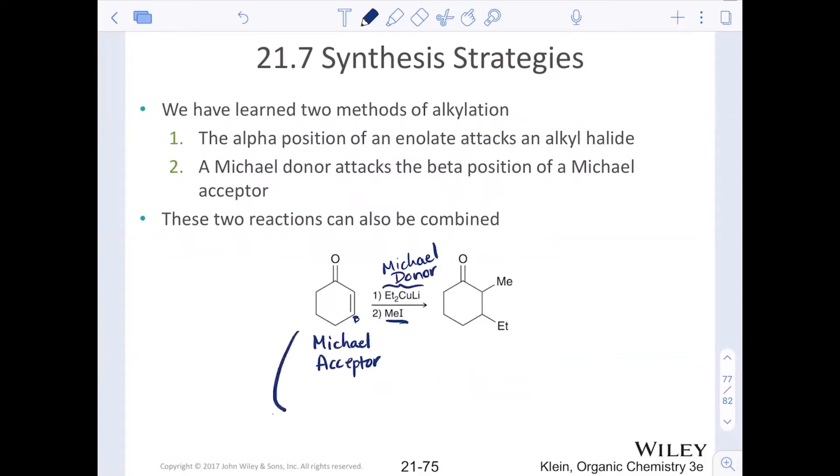Remember that after step number one, we have added the R group, which is ethyl from the cuprate to the beta position, and we have effectively an enolate that we had seen in the section of Michael reactions. Follow up with a water or an acid workup.